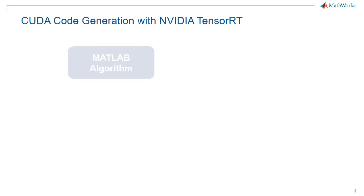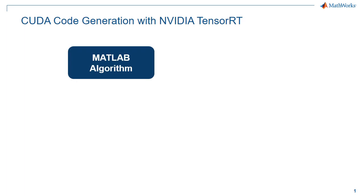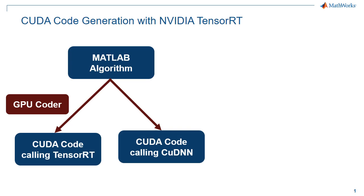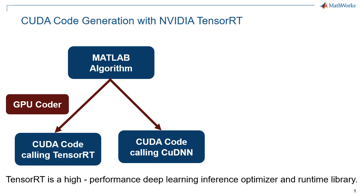GPU Coder generates optimized CUDA code from your MATLAB algorithm and leverages the TensorRT library for inference on NVIDIA GPUs. TensorRT is a high-performance deep learning inference optimizer and runtime library.